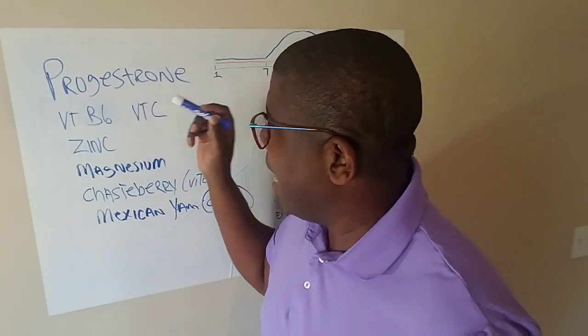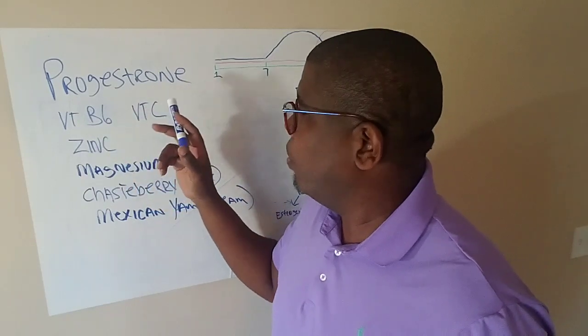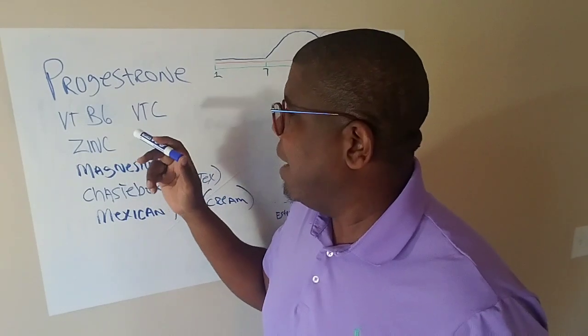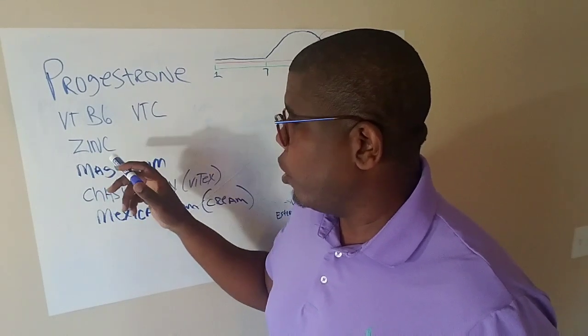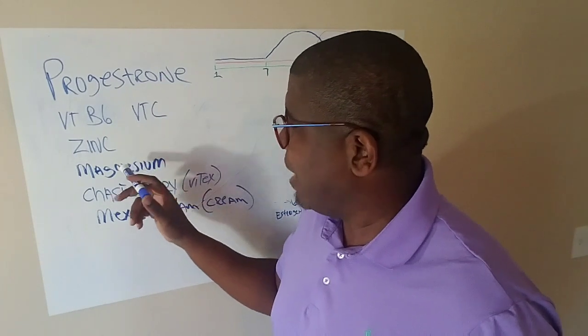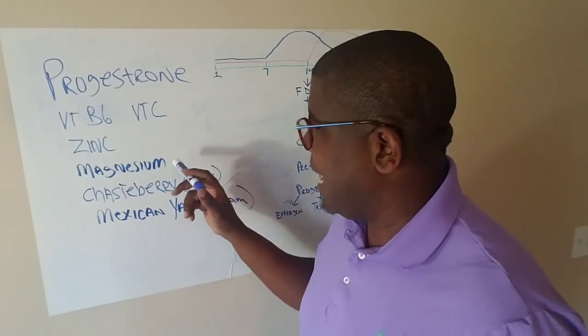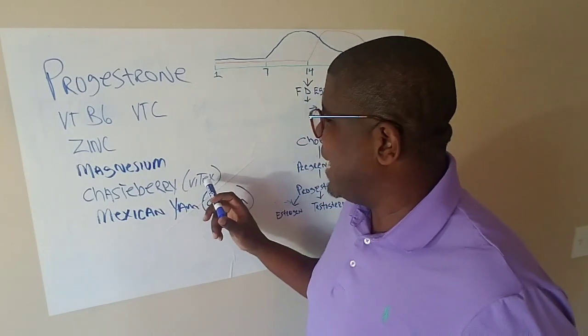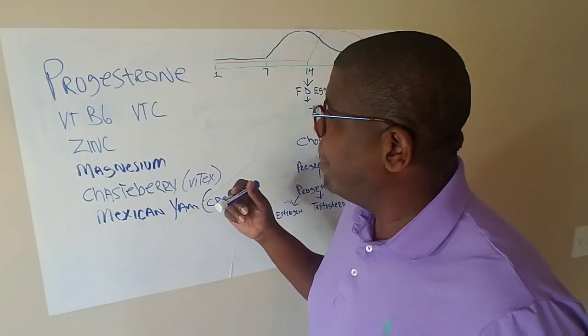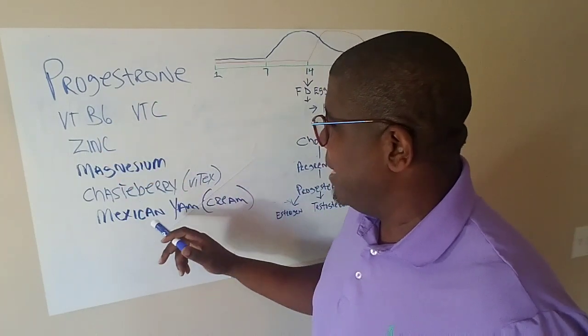Let's talk about progesterone, how to elevate it. Vitamin B6, vitamin C. Again, in another video I'll break down the sources of where you can get these things from. What you don't want to do is get synthetic vitamins, so make sure the vitamins you're getting are not synthetic. Zinc—there are a lot of herbs that have zinc. Magnesium—you can buy magnesium itself, but make sure you're getting high quality. It says that many of us in America are deficient in magnesium. Chasteberry, which is also known as Vitex, and Mexican yam, which is a cream, guys, and this has a great effect on producing progesterone.